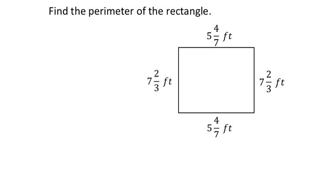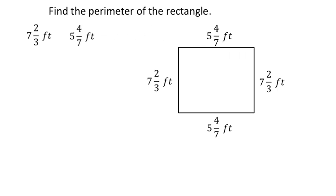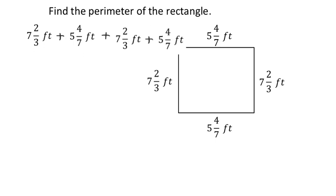Perimeter is all the way around the shape — we add all side lengths. The left side matches the right side at seven and two-thirds, and the top matches the bottom at five and four-sevenths. So we need to add all four values. The good news is we see repeated values: left equals right, top equals bottom, so we only need to convert each unique fraction once.